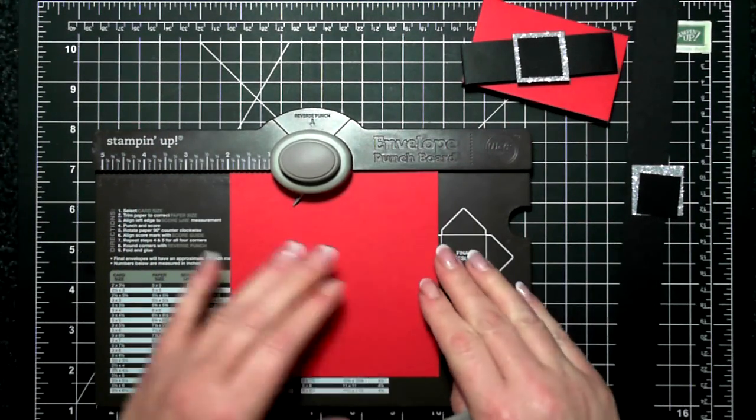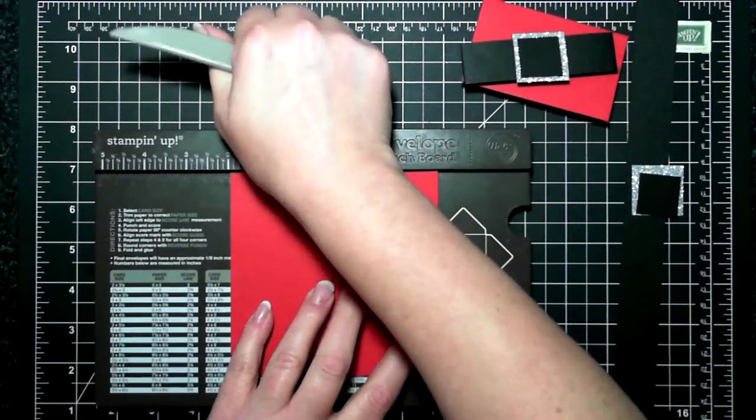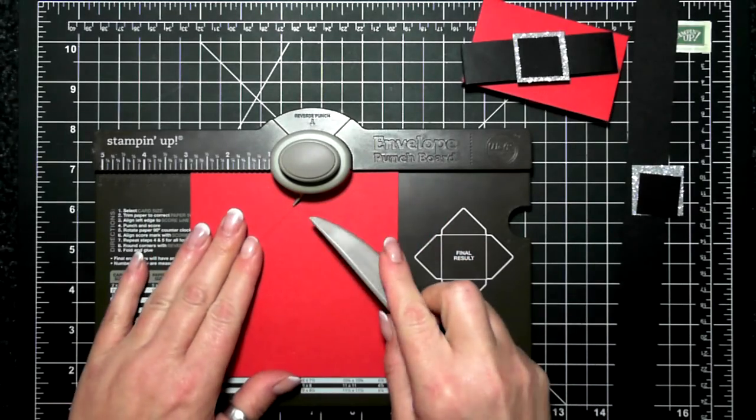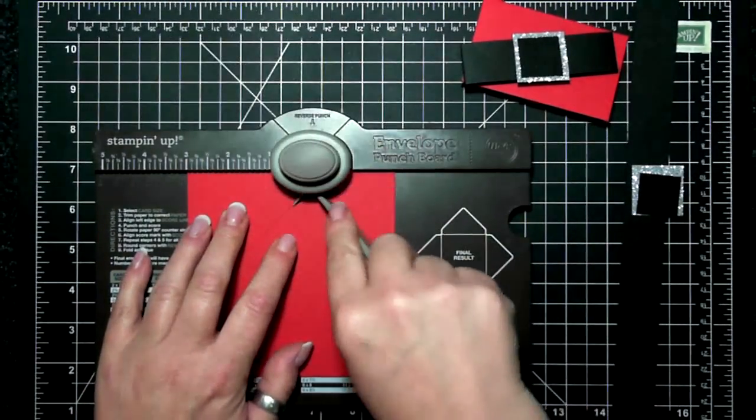I'm going to show you - we are going to punch and score at 2. Then you're going to turn around and line your score guide up to your previously scored line, punch and score.